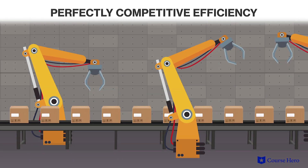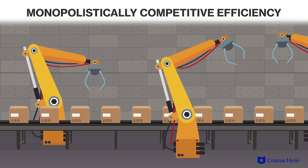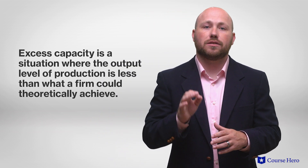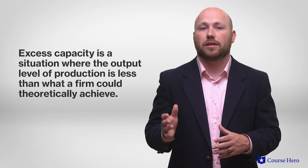The difference between monopolistic competition and perfect competition is that at the long-run equilibrium, the perfectly competitive firm will be producing at optimal efficiency, while the monopolistically competitive firm will be producing at less efficient points. In order to maximize profits and minimize costs, firms will reduce output and raise prices rather than utilizing all the resources at their disposal. Consequently, there will be excess capacity in this market. Excess capacity is a situation where the output level of production is less than what a firm could theoretically achieve. This underutilization of resources is evident in many monopolistically competitive markets, such as specialized retailers, restaurants, aircrafts not filled to capacity, or hotels that are not fully booked.